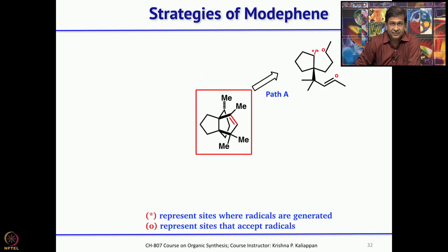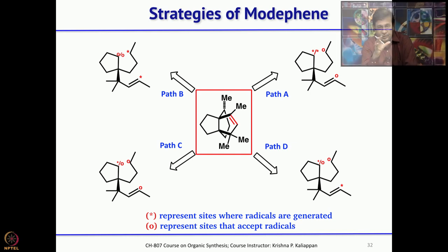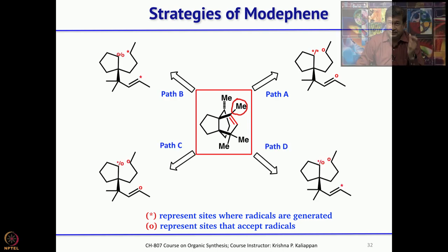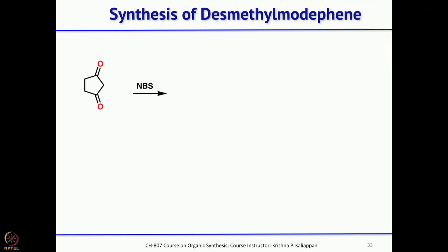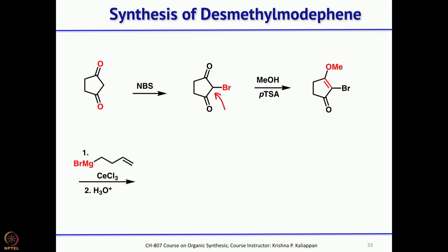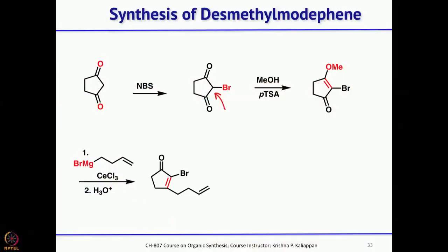He considered 4 different strategies and first wanted to check his approach by synthesizing desmethyl modhephane (without the methyl group). Starting with cyclohexane-1,3-dione, treatment with NBS introduces bromine at a specific carbon. Treatment with methanol and PTSA forms the corresponding enol ether. Then, the butenyl magnesium bromide (used earlier for sylviperfoline) was added, followed by hydrolysis to give 3-homoallyl-2-bromocyclopentenone.